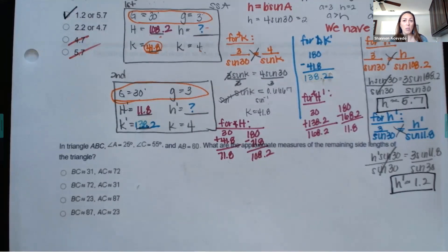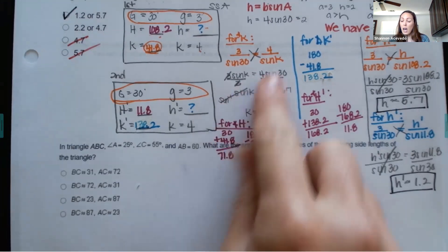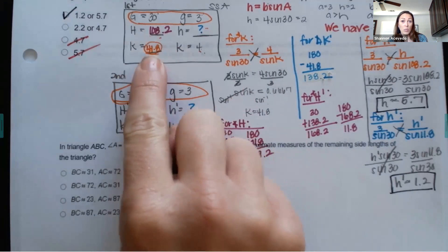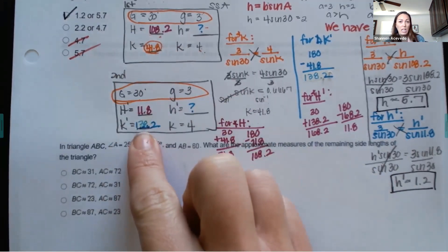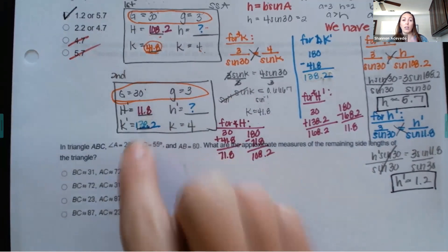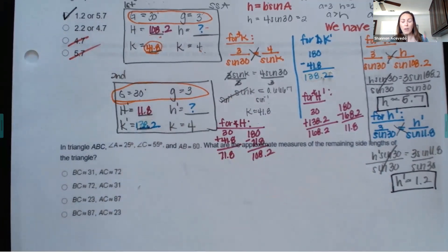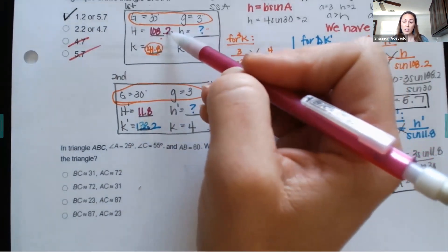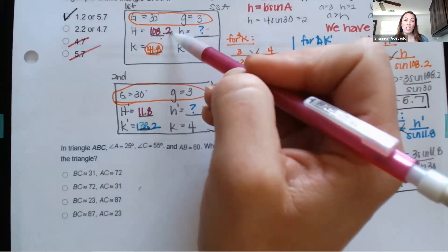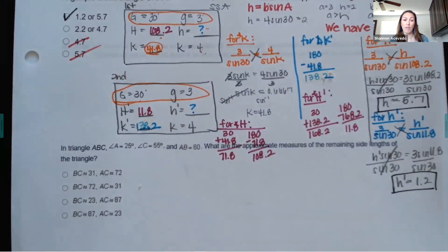Similarly for H prime: 3 over sine of 30 equals H prime over sine of 11.8. Cross multiplying: H prime sine of 30 equals 3 sine of 11.8. Dividing by sine of 30, H prime is approximately 1.2. So my two values are H equals 5.7 and H prime equals 1.2.